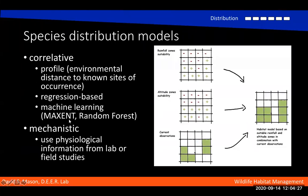Species distribution models are a big topic. A lot of qualified people in the WEC department are experts who use these. I'm not one of them, but I can explain the basic idea: you take environmental characteristics that you think are important to an organism's distribution and combine that with observations and information about the surrounding environment to predict where that organism could possibly exist. Here you see an example doing it with rainfall and altitude and some observations to predict where we would see it.